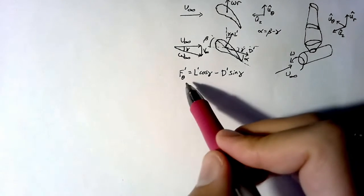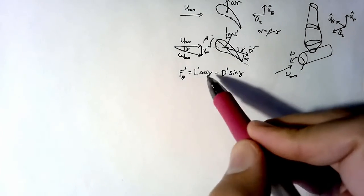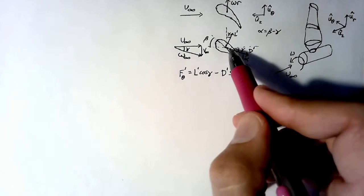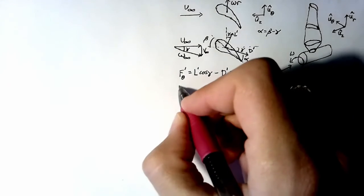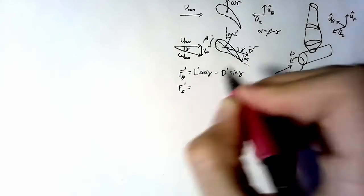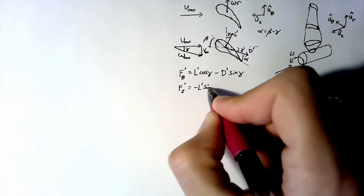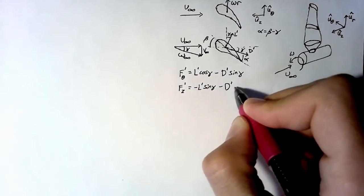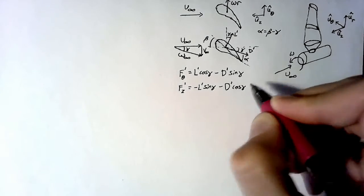Now while this is generating some force in the theta direction due to the lift, it's also generating some force in the z direction. The force in the z direction is going to be minus l prime times sine of gamma minus d prime times cosine of gamma. Remember that z is facing upstream.